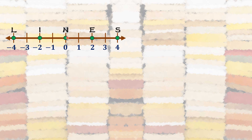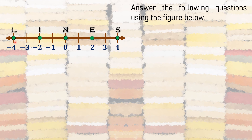Let's have another example. We have points L, I, N, E, S with the following coordinates: point L is negative 4, point I is negative 2, point N is 0, point E is 2, and point S is positive 4. Using this figure, let us answer the following questions.